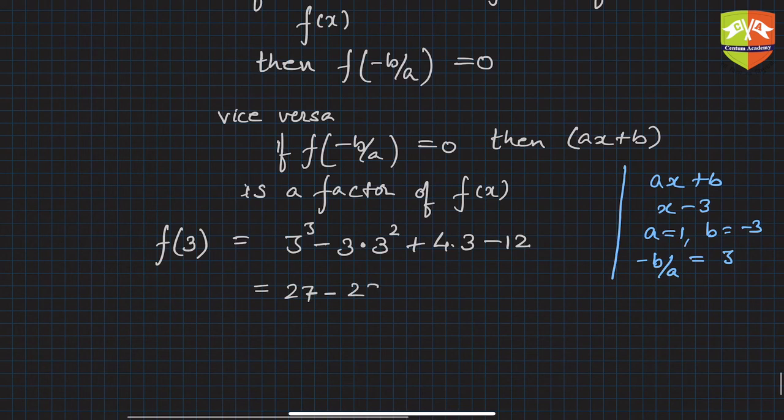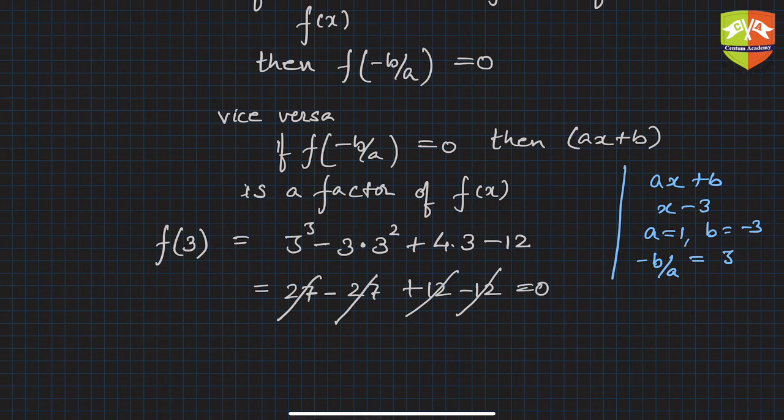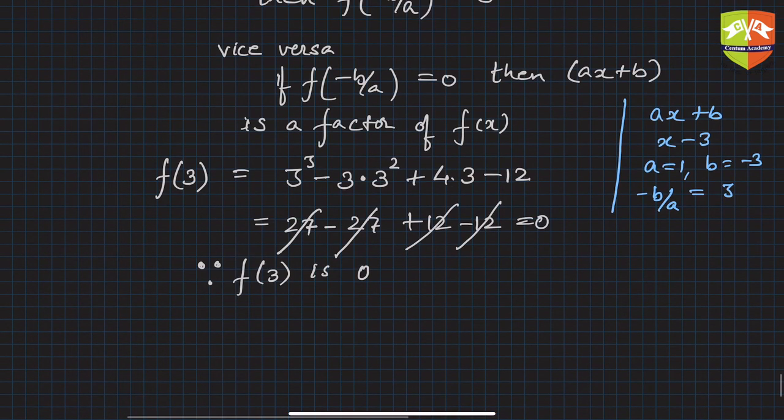Since it is 0, we write: since f(3) = 0. Don't write the word 'O', write the numeral 0, because the word O means something else—O of a polynomial. So f(3) = 0.